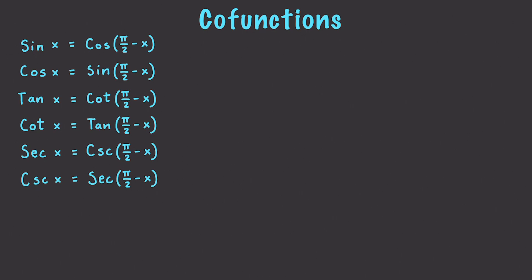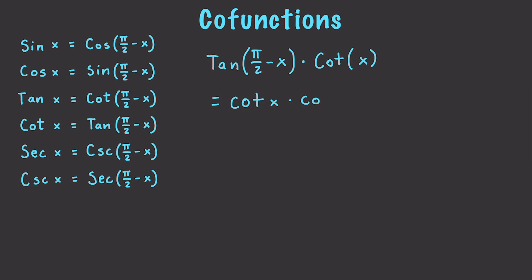Now I'm going to use this information to simplify problems. Let's say we have tangent of pi over 2 minus x times cotangent of x. Using the co-function identity, we can convert this into cotangent of x times cotangent of x, which equals cotangent squared of x.